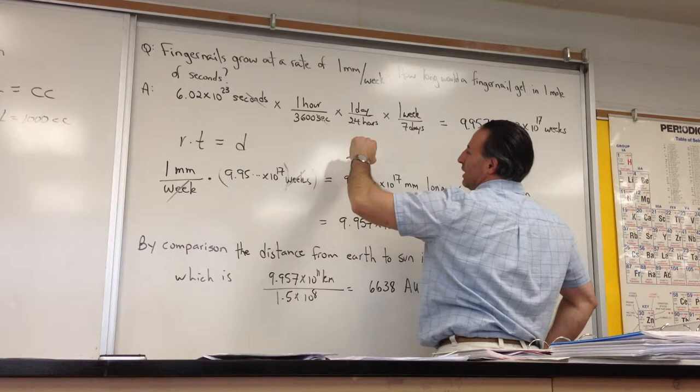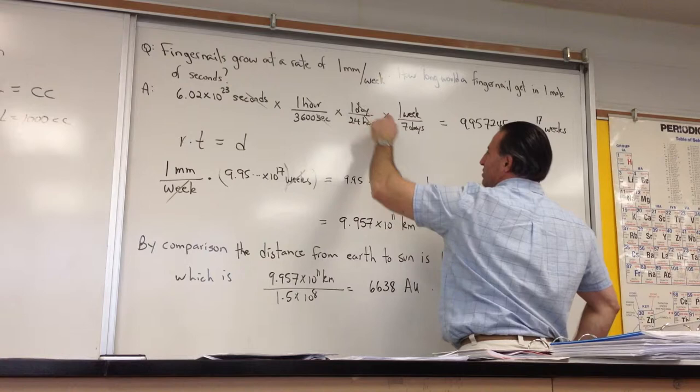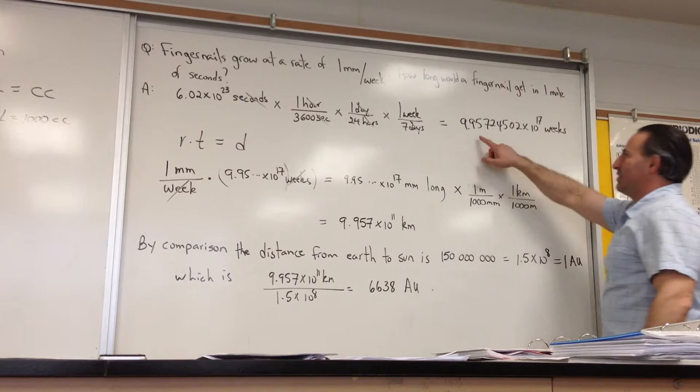Then, we know there's 24 hours per day, so we're going to cross out hours that way, and there's 7 days per week, so it allows us to cross out days. Our answer is going to be in weeks. That's the only unit that hasn't been crossed out. It turns out we have 9.95 times 10 to the 17 weeks in a mole of seconds.